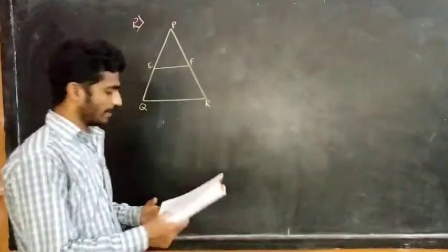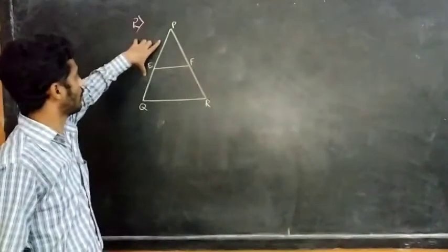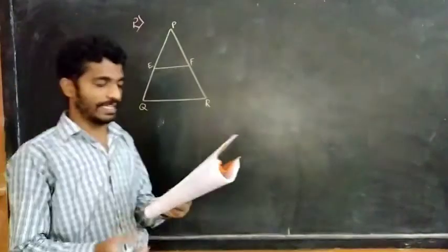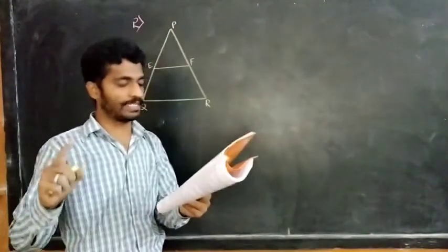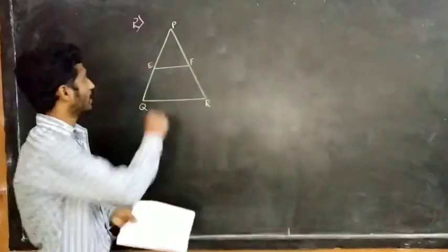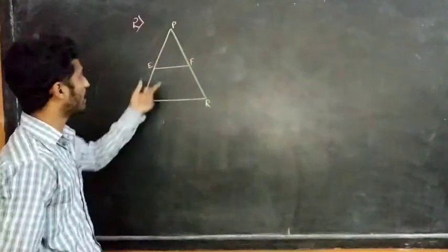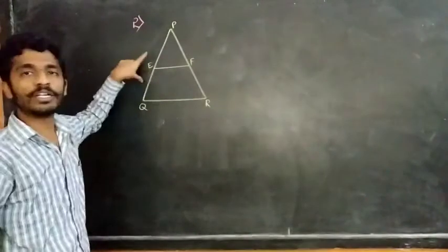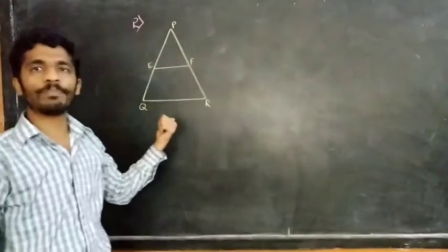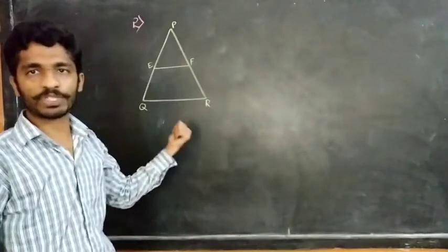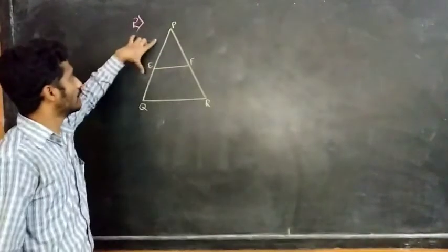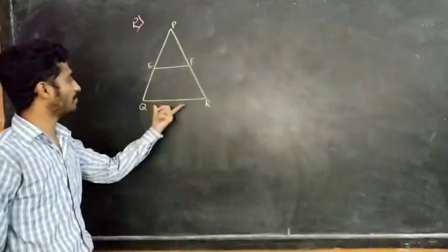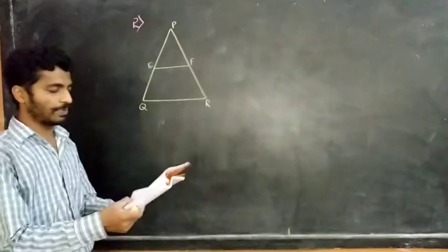In the second question, E and F are points on PQ and PR in triangle PQR. For each of the following cases, state whether EF is parallel to QR. When can we say EF is parallel to QR? When the sides ratios are equal to each other — it is the converse of BPT. If you get these sides ratios equal, then we can say that EF is parallel to QR.